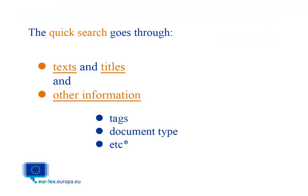When searching, keep the following guidelines in mind. Urlex will search through texts and titles of documents, but also through other information we store about each document, like tags, document type, and other metadata.